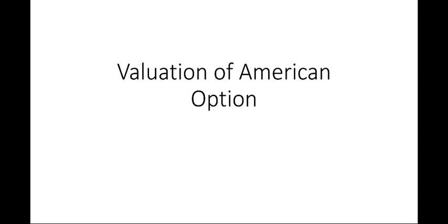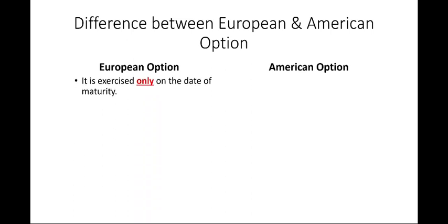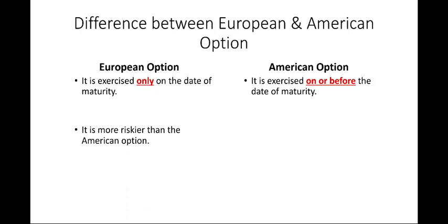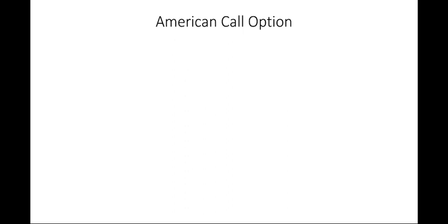Hello everyone, today we are going to discuss valuation of American options using the binomial option pricing model. Before going into the valuation, we need to know the difference between European and American options. European options can be exercised only on the date of maturity, while American options can be exercised on or before the date of maturity. American and European options are just two styles of trade — they are not types of options.